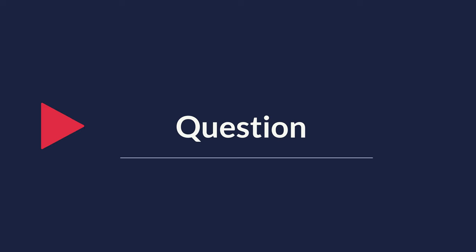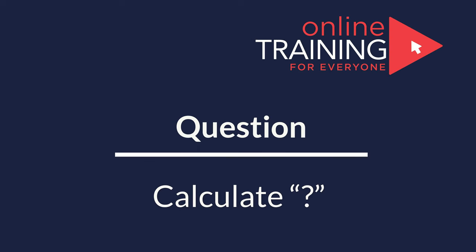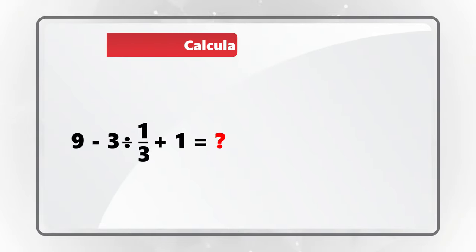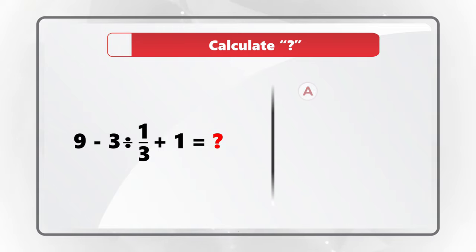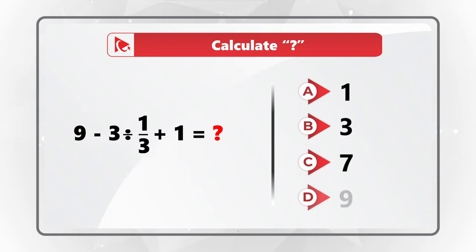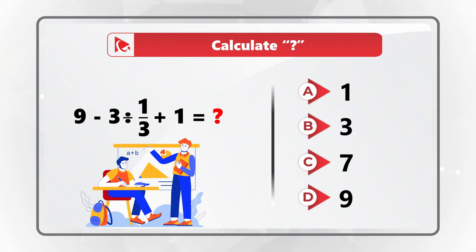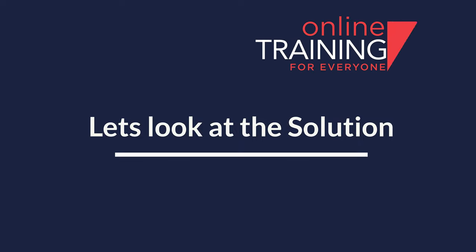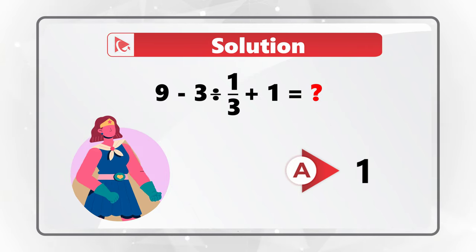Here's an amazing question to test your math skills. You're presented with a simple expression and need to calculate its value. You have four choices: choice A is 1, choice B is 3, choice C is 7, and choice D is 9. Give yourself a little time to calculate the solution. The correct answer is choice A, 1 — but why?